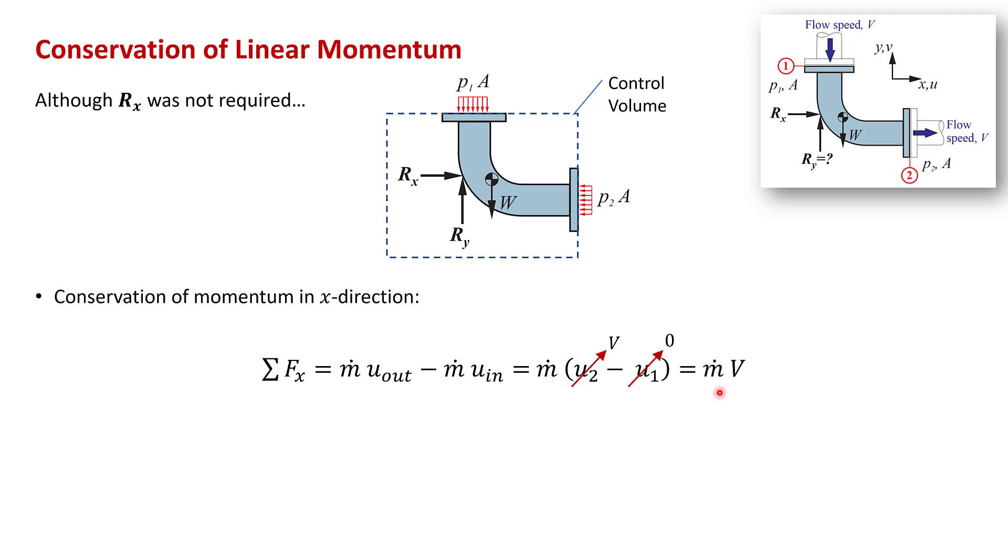So that's the rate of momentum out minus the rate of momentum in in the x direction. Next, we consider all the forces in the x direction on the control volume. Again, noting that x is positive to the right. The only forces in the x direction we have are the unknown reaction force, rx, and this pressure term on the flange, p2A. rx is in the positive x direction. So that's plus rx. And p2A acts in the negative x direction. So that's minus p2A. And we set all this equal to the rate of momentum out minus the rate of momentum in in the x direction. So we set that equal to m dot v. And then you can just simply solve for rx.